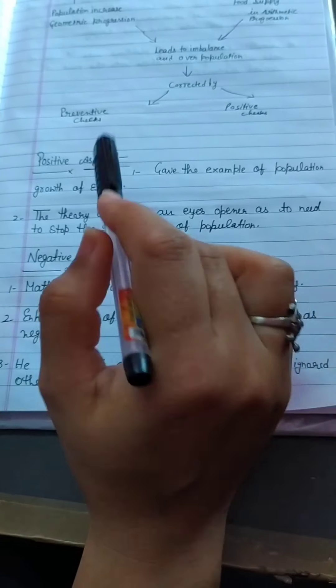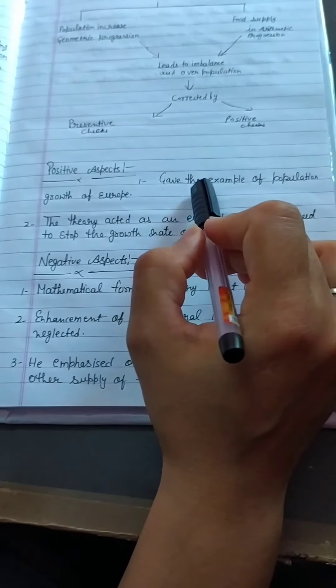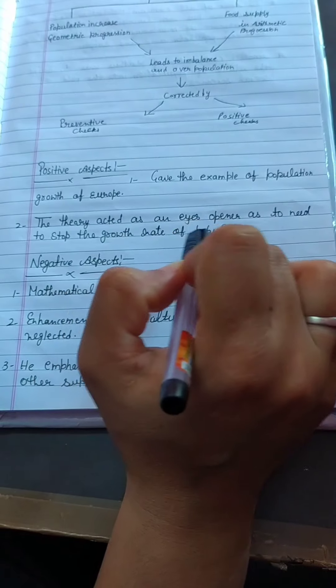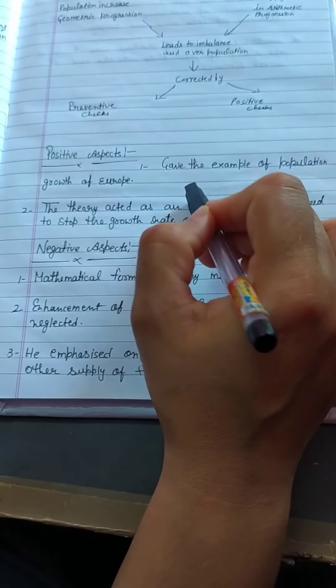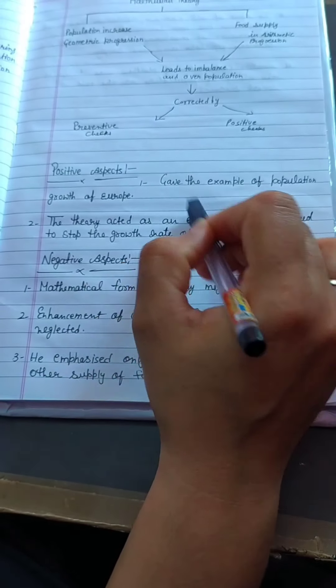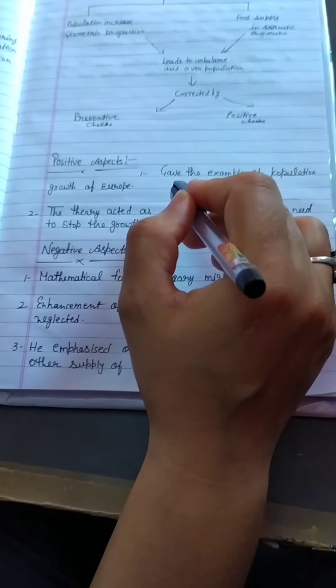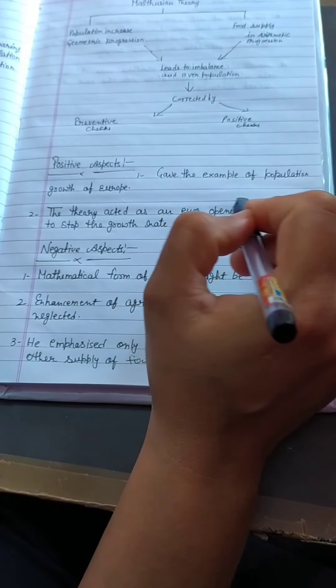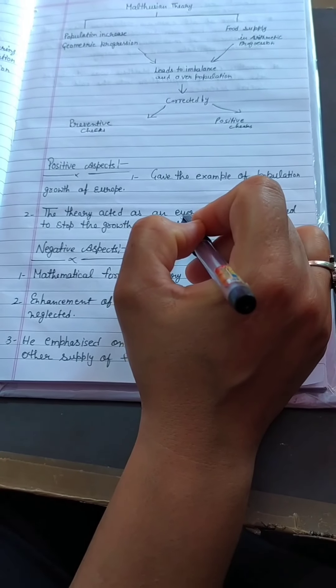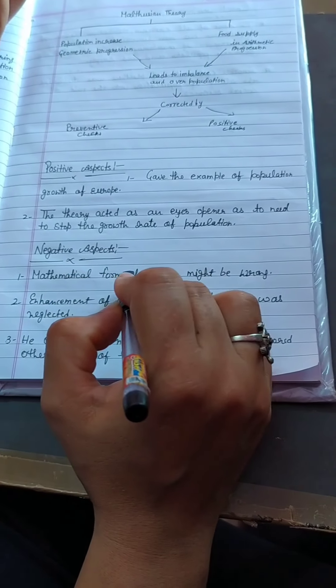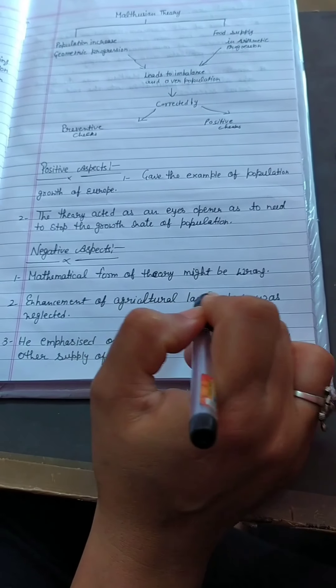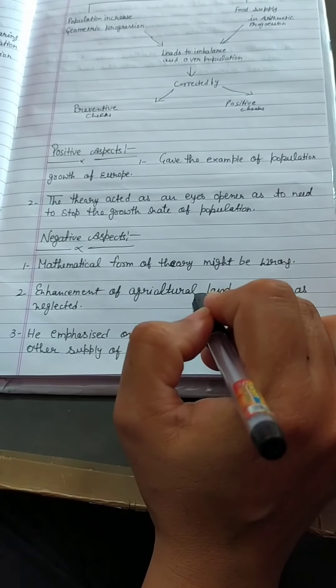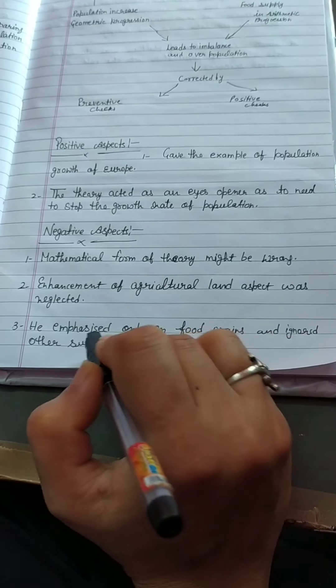Now we will see the positive and negative aspects of this theory. Positive aspects: First, it gave the example of population growth of Europe. Second, the theory acted as an eye opener as to the need to stop the growth rate of population. Negative aspects: First, the mathematical form of theory might be wrong. Second, enhancement of agriculture land aspect was neglected. Third, he emphasized only on food grains and ignored other supply of food.